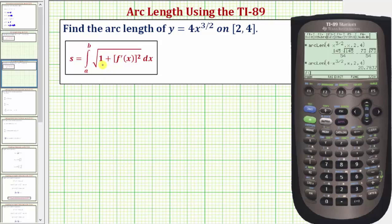Now we'll enter the integrand function which is going to be the square root, so second multiply, and then we have one plus the square of f prime of x, which would be the square of the derivative of 4x raised to the power of 3 halves. So we'll have open parenthesis, and then the derivative, so F3 number one for differentiate. The function 4x raised to the power of 3 halves, comma the variable x, close parenthesis. So that's for the derivative. We want to square the derivative, so another close parenthesis raised to the power of 2. Another close parenthesis for the square root.